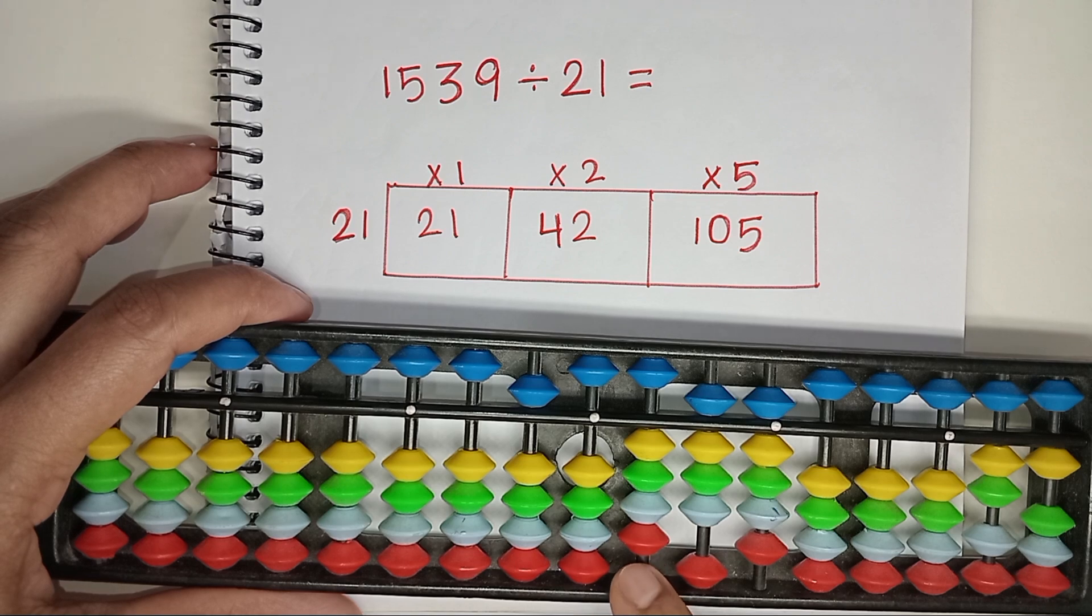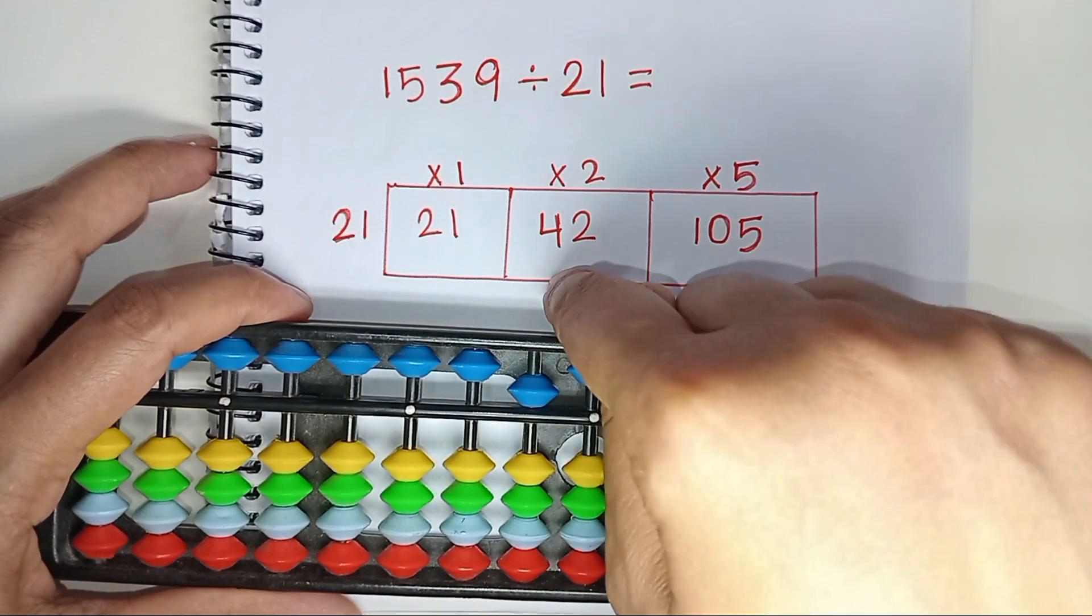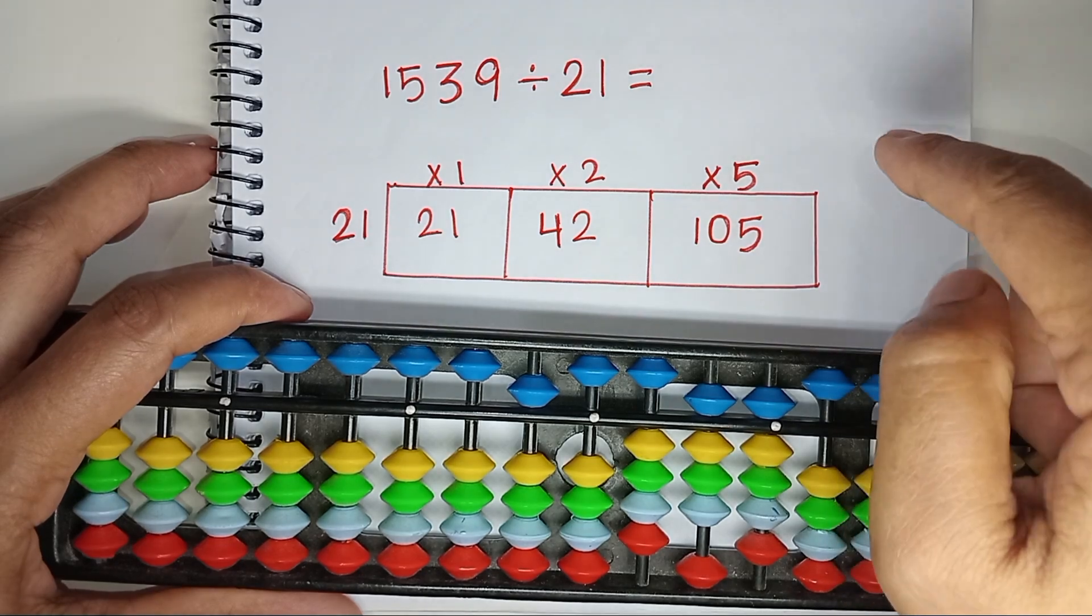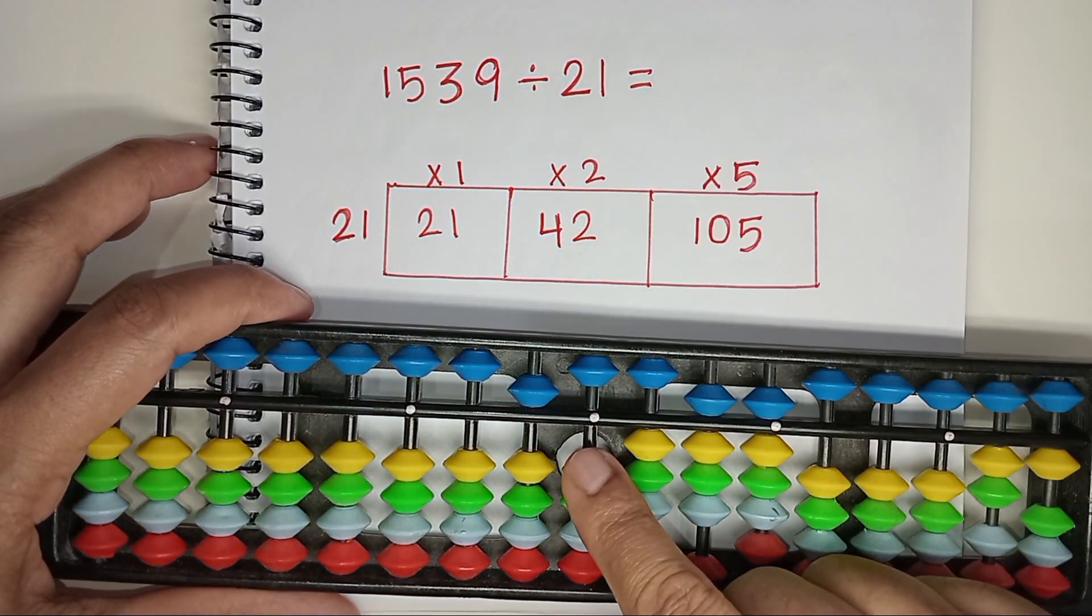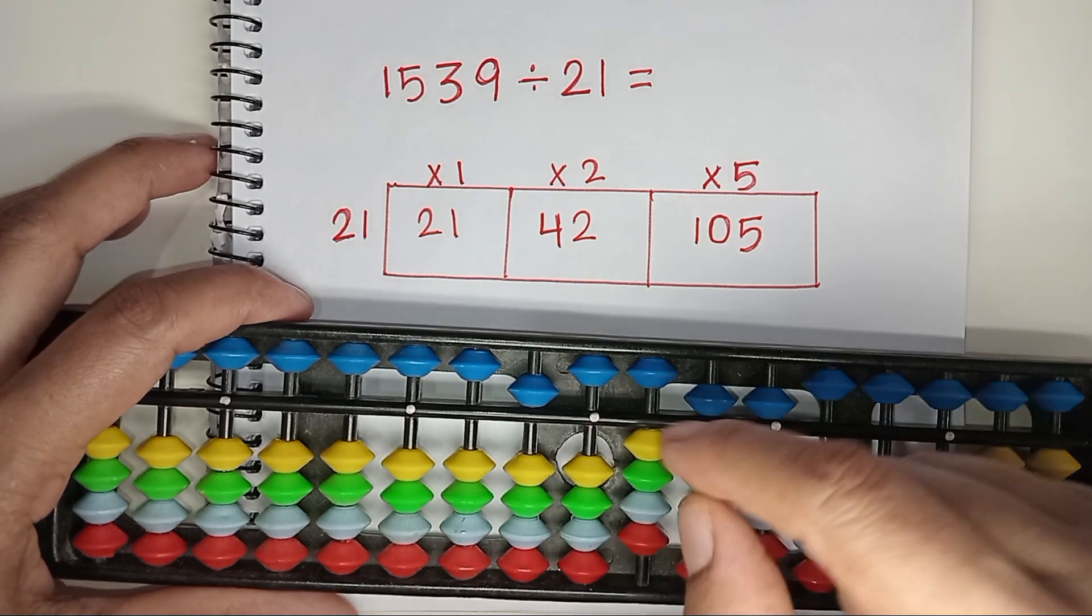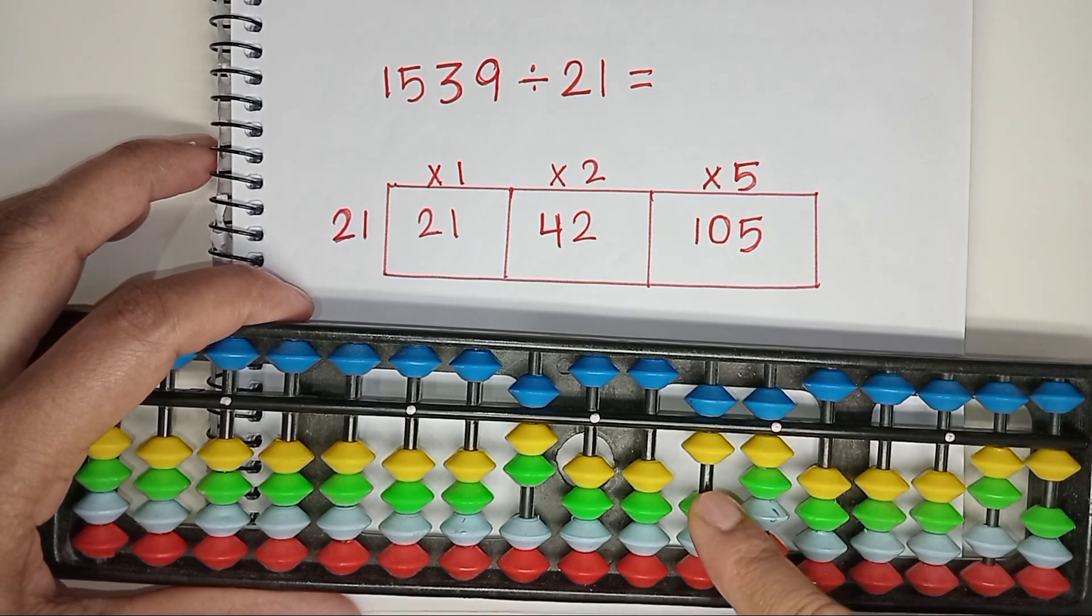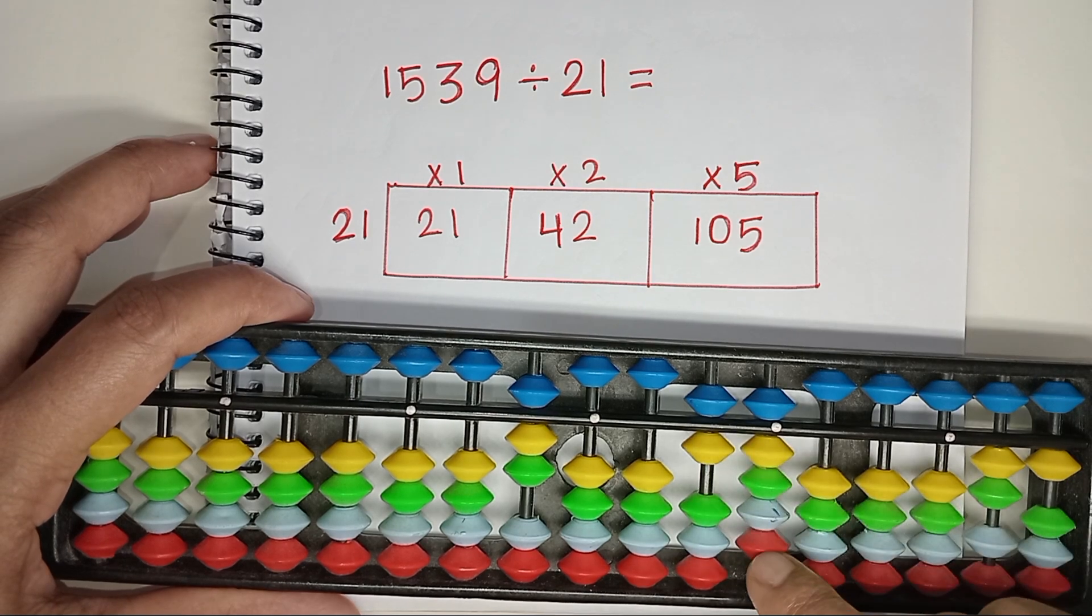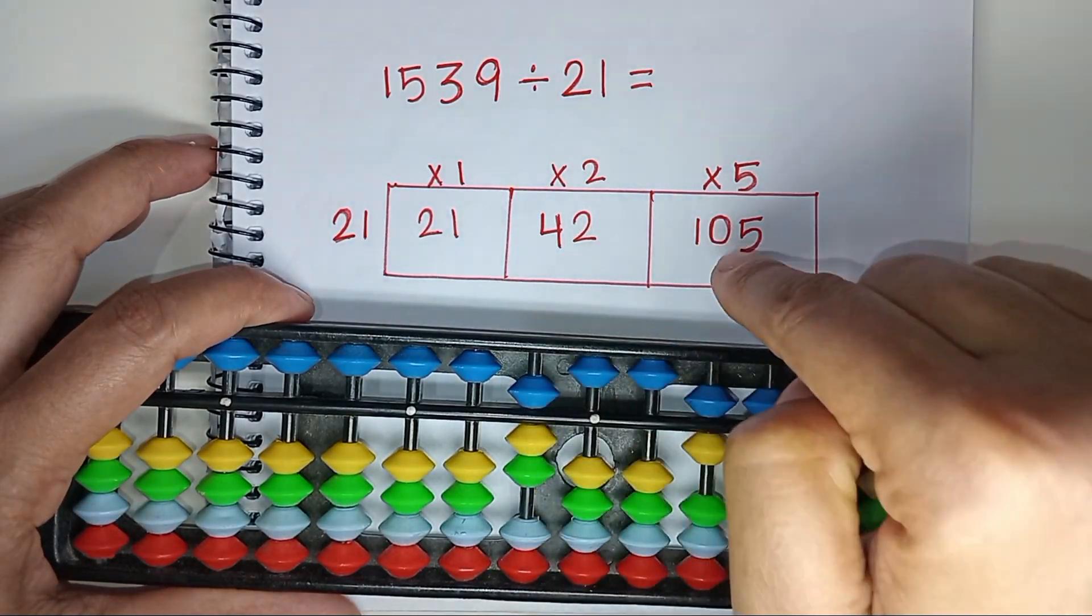Consider 2 rods: 4 and 8, which is 48. 48 falls between 42 and 105. We will consider the smaller one. 21 times 2 is 42. Jump 1 rod and place the answer here. 21 times 2 is 42. Less 40 and less 2. 6 and 9, 69 is left. 69 falls between 42 and 105.